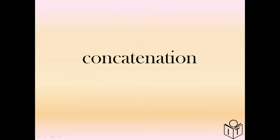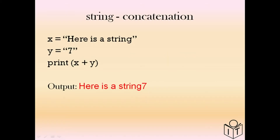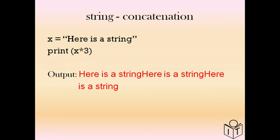So how do we add strings together? We use concatenation. If you want to add strings together you can just use the plus symbol. So here is a string and here's another string 7 — we can add them together and the output is 'here is a string 7'.